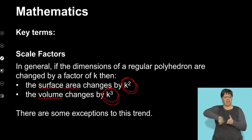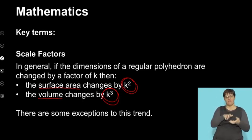So there are some cases where it won't be the surface area multiplied by k² and the volume by k³. But in general, when I've changed my dimensions by a scale factor of k, the surface area changes by k² and the volume by k³.